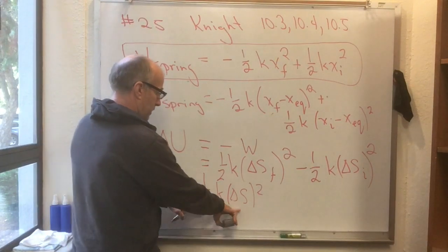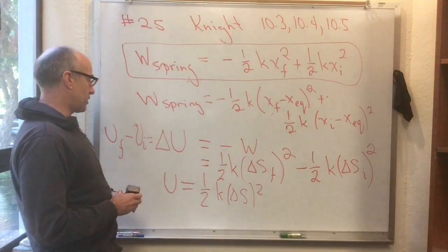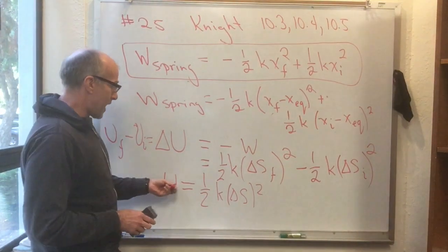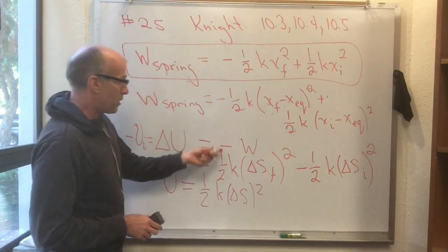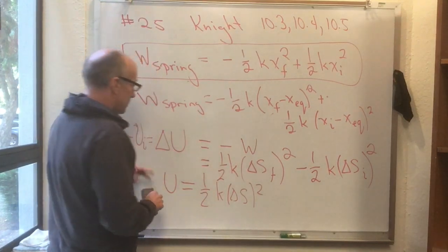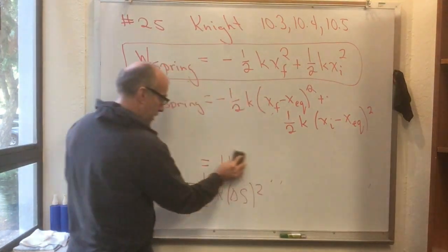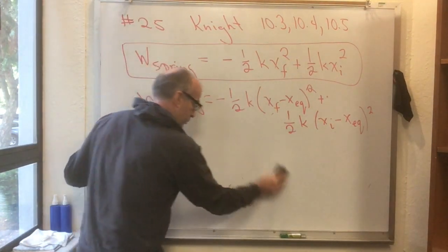I plug in u final is this formula with delta s replaced by delta s final. And u initial is this formula with delta s replaced by delta s initial. And if I choose that as my u, then delta u is this and the work done by the spring is that. So this is great. You've got it. That's the energy stored in a spring.